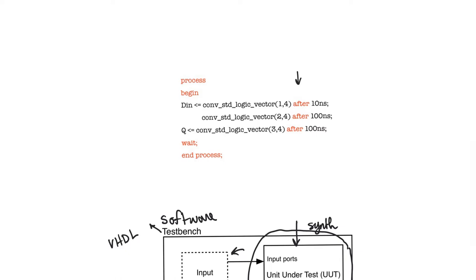When we discussed the wait statement, we said that any wait statement that has an explicit delay — wait for — or a wait statement without an argument, which is basically wait for infinity, is unsynthesizable. But they can be used in the software test bench because the software test bench is not going to pass through synthesis. So you can generate any kind of signal you want — periodic signals, aperiodic signals, anything you want.